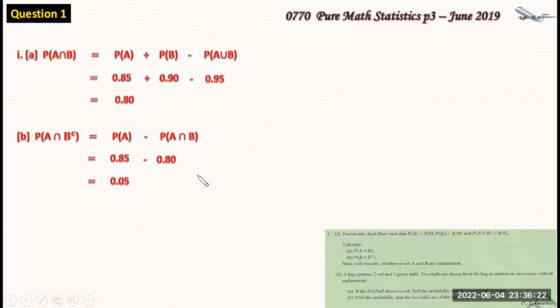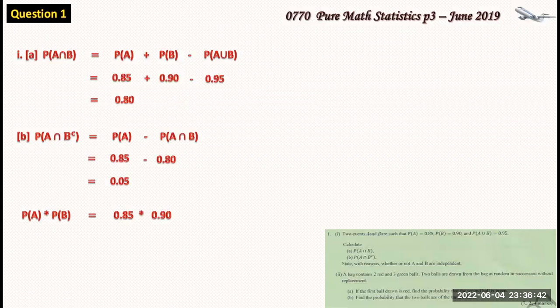Now state with reasons whether or not A and B are independent. So A and B will be independent if the probability of A times the probability of B is equal to the probability of A intersection B. Note that that's the definition for independent events. If the product of their individual probabilities is equal to the intersection of their probabilities.